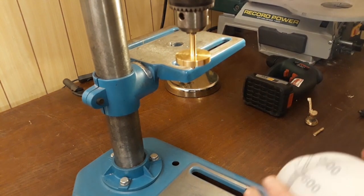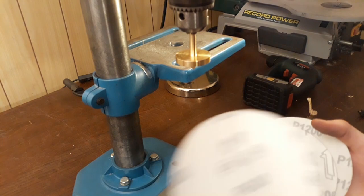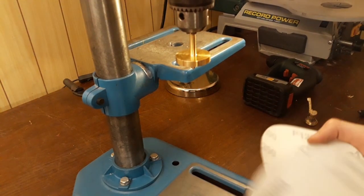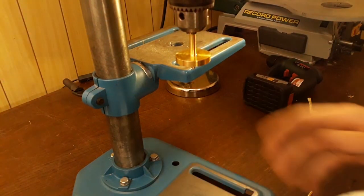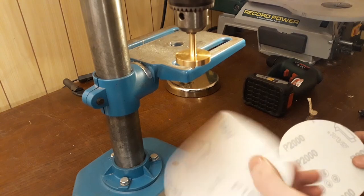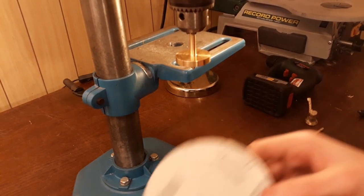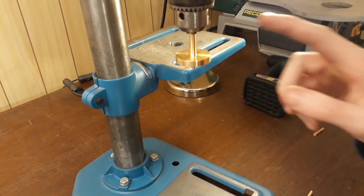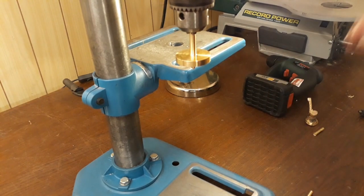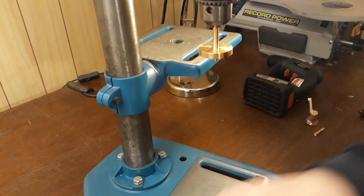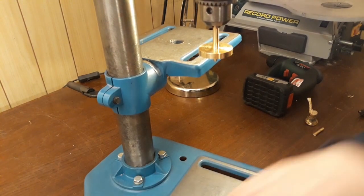And for sanding and polishing I'm going to use 600, then 1200, 1500, and the finishing grit will be 2000. And then I'm going to use a polishing compound. Alright, let's get started with the 600 of course.